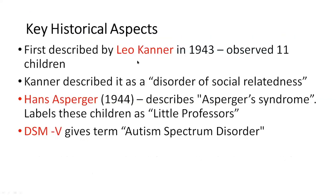The disorder was first described by Leo Kanner as early as 1943. He described it as a disorder of social relatedness. Very soon after, Hans Asperger also described a case series of children whom he called 'little professors,' and this became the classical description of what we know as Asperger's disorder in ICD-10. DSM-5 has given the term Autism Spectrum Disorder, and this is the terminology that is now becoming very popular. We're going to look at the nosology and classificatory systems and how DSM-5 and ICD-11 have arrived at this term.